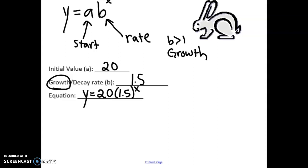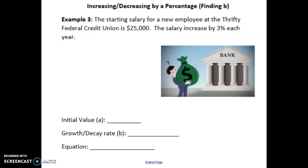Now that seemed pretty easy, because the two values, 20 and 1.5, were directly in the word problem already. But we do have problems, like this one, where we are increasing or decreasing by a percentage. And we have to find out what B is. We don't know B right off the bat.